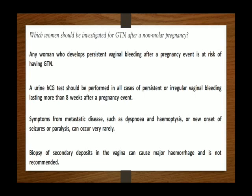Which women should be investigated for GTD after a non-molar pregnancy? Any woman who develops persistent vaginal bleeding after a pregnancy event is at risk of GTD. A urine HCG should be performed in all cases of persistent or irregular vaginal bleeding lasting more than eight weeks after a pregnancy event. Symptoms from metastatic disease — such as dyspnea, hemoptysis, new-onset seizure, or paralysis — can occur, but very rarely. Biopsy of secondary deposits in the vagina can cause major hemorrhage and is not recommended.